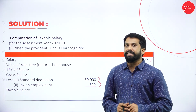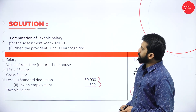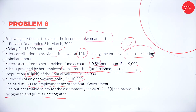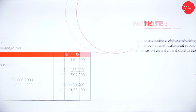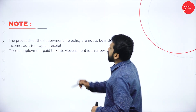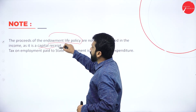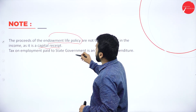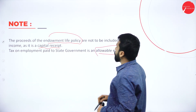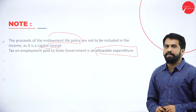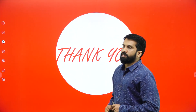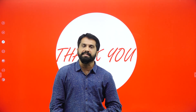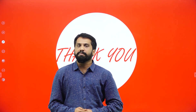If the provident fund is unrecognized, what will be your calculation? Same calculation — salary will be 1,80,000. But we will not do any calculation for provident fund. So 1,80,000 and 15% of salary for rent-free accommodation — 27,000 — equals 2,07,000. Minus 50,600, the answer will be 1,56,400. We will not consider anything about PF. This is all about today's session — we are done with two problems with concept. Understand the concept and work out the problems. Thank you.